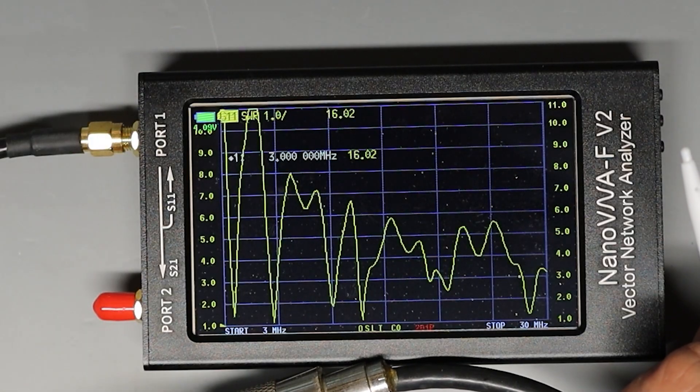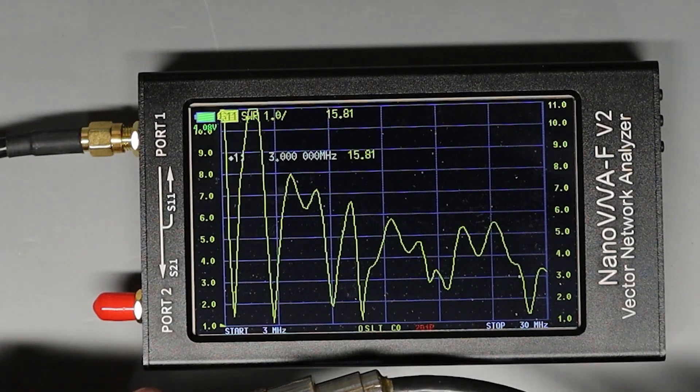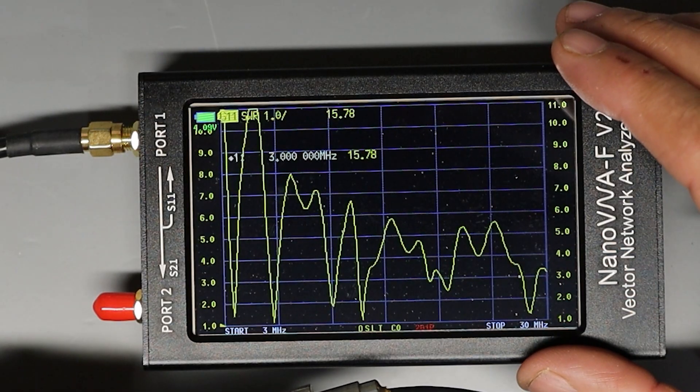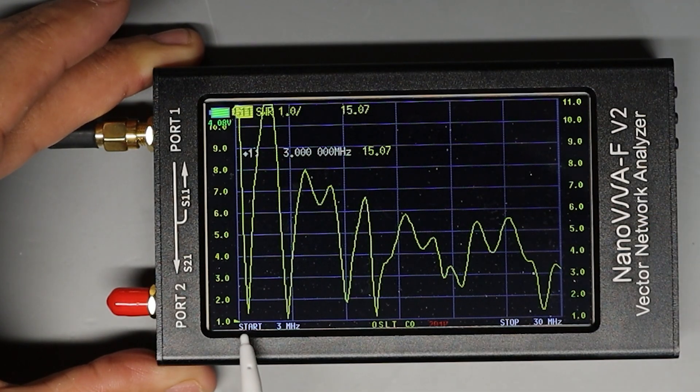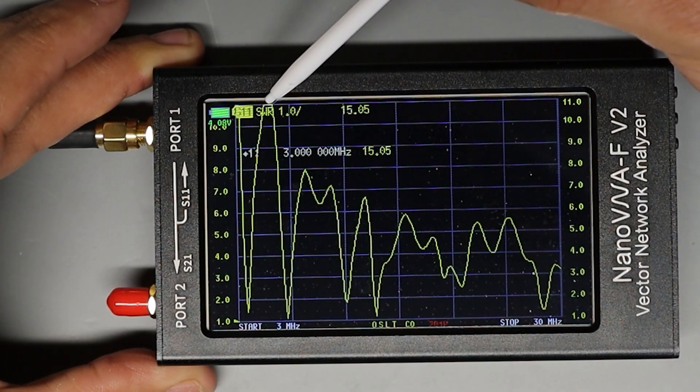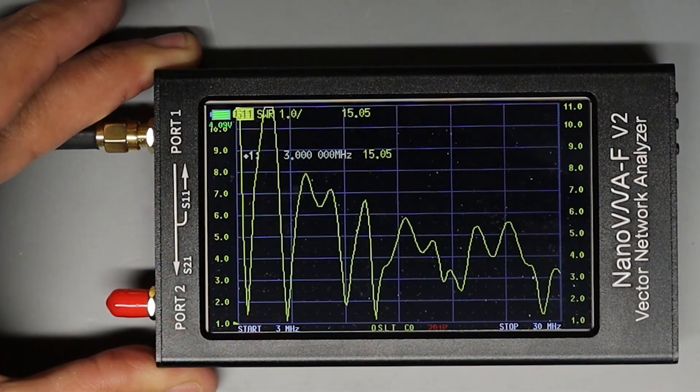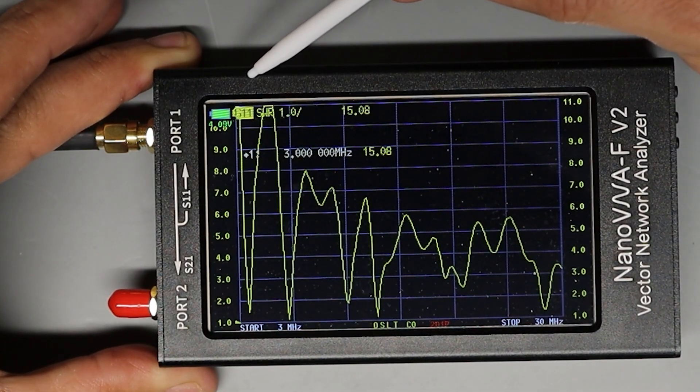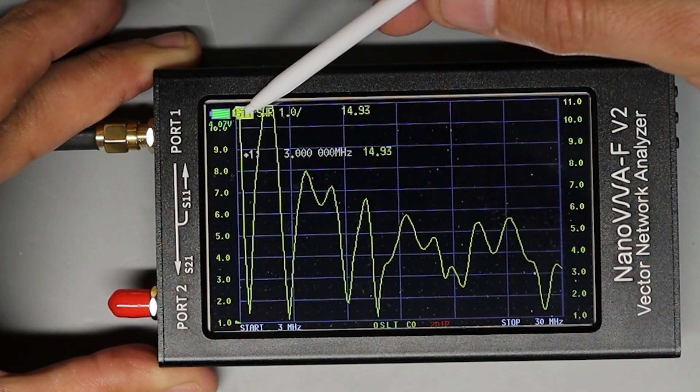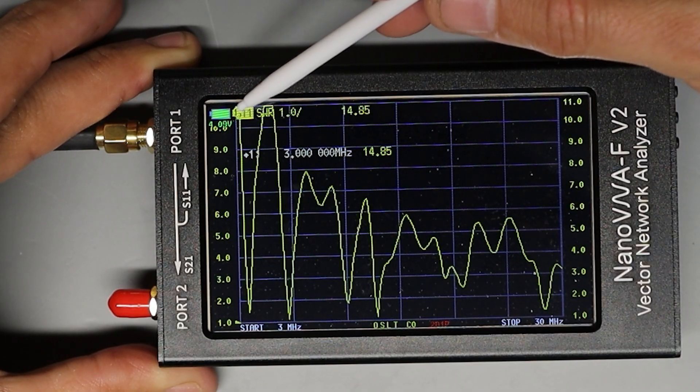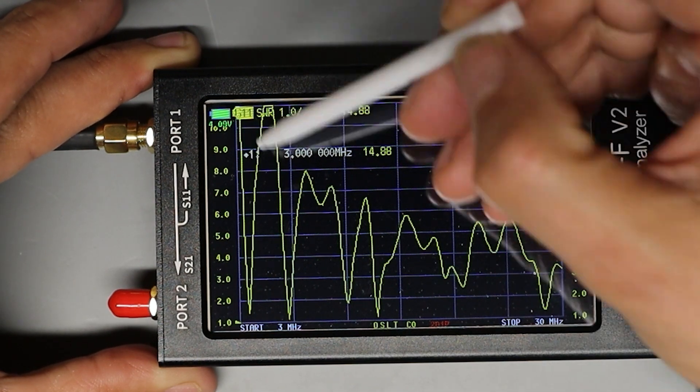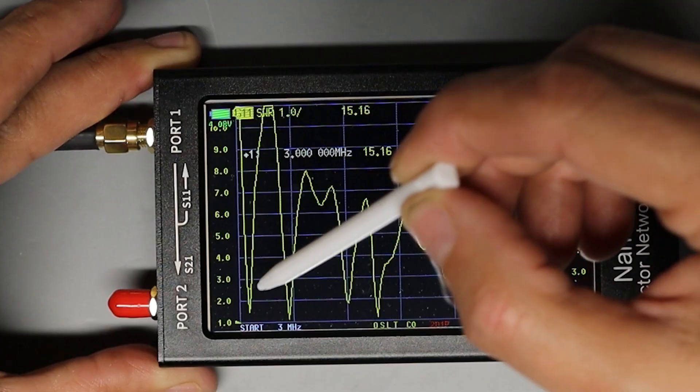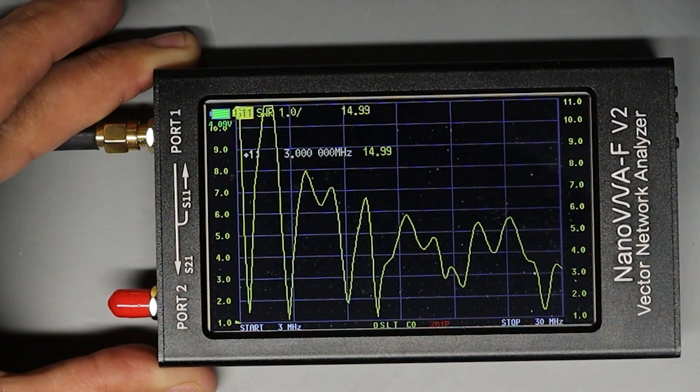So I've brought in an SMA to SO239 adapter so I could connect up my fan dipole that's in the backyard. You can see what we're looking at is a plot of the SWR over the span of frequencies between 3 megahertz and 30 megahertz. And you can see we've got some areas where there's real high SWR and we've got some areas where there's low SWR. Right now it's kind of hard to see because the marker is hidden behind this S11 icon but we're starting off at 3 megahertz and we're measuring an SWR of 14.9.